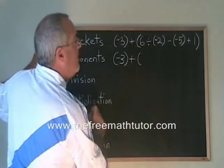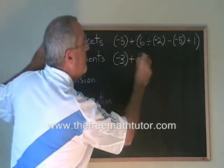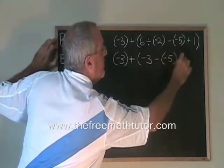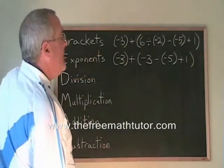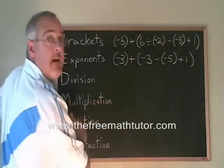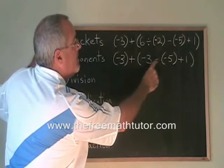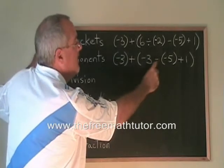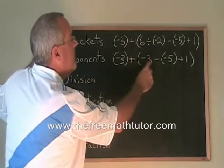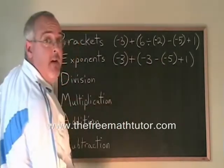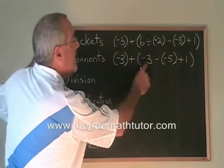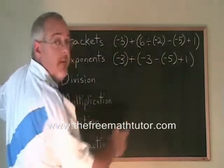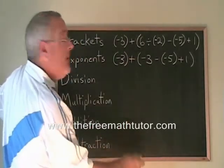Six divided by -2 is -3, and then we copy down the minus -5 plus 1, close our bracket. Next, we're still inside this bracket, and our next operation is either the minus or the plus. We get to the minus first reading from left to right, so we're doing it first. We have -3 minus -5. Applying the laws of integers, -3 minus -5 is the same thing as -3 plus 5. -3 plus 5 is positive 2.